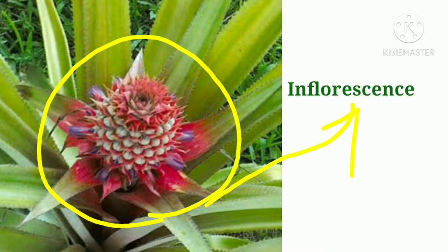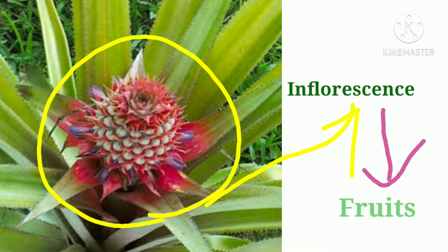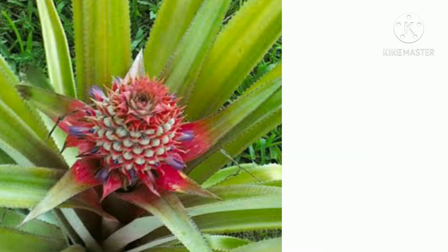Next is the composite type of fruits. In this case, these are actually false fruits because the whole inflorescence together produces multiple or composite type fruits. Composite fruits are of two types.